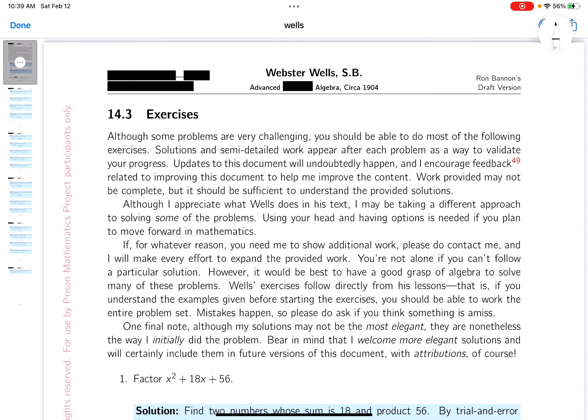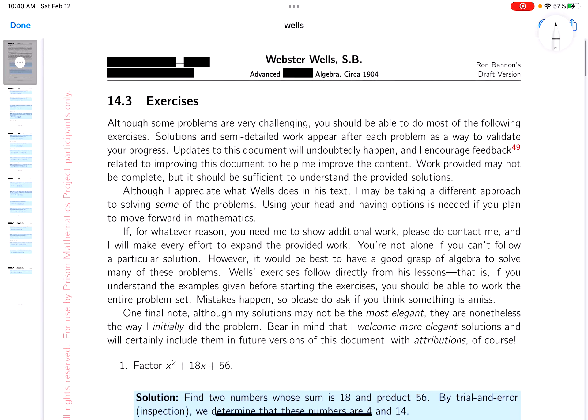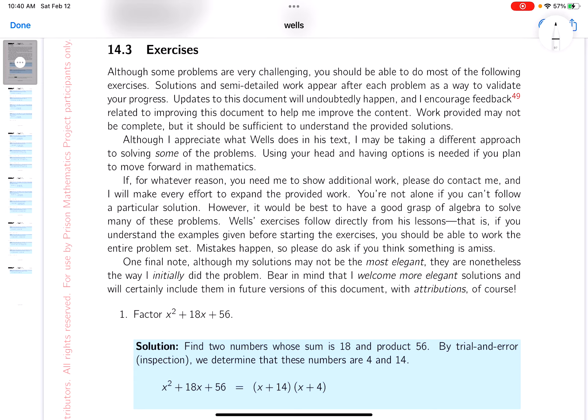Okay, we're in exercise set 14 and we're going to do this by inspection and also by what they're suggesting to do, which is to find two numbers whose sum is 18 and product is 56. This is what's known as an AC rule, at least the popular culture calls it an AC rule. It's just a pattern.